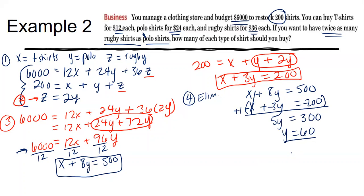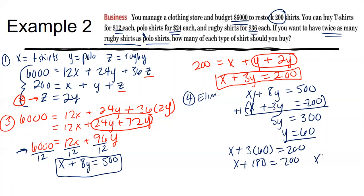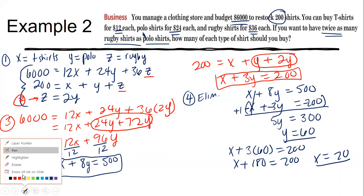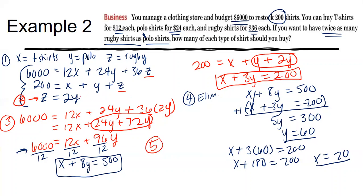Now that y = 60, substitute into x + 3(60) = 200: x + 180 = 200, so x = 20. Step five: go back to step two's equation z = 2y. Since y = 60, z = 2(60) = 120.